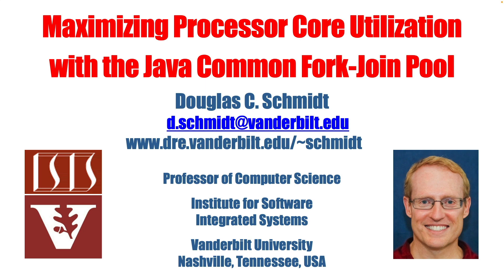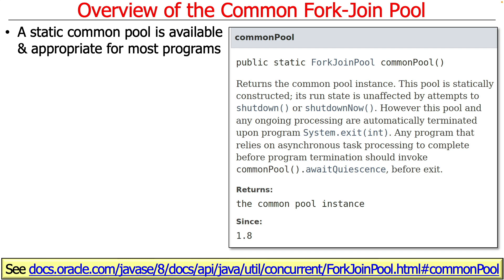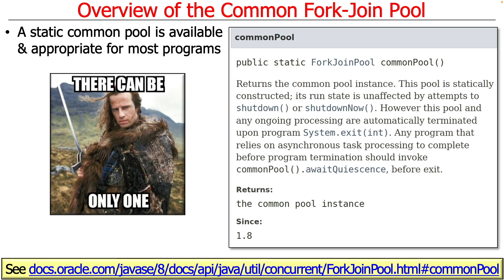We're now going to talk about the Java Common Fork Join Pool. We've talked about it over the course of other lessons, but let's really focus on it now and show how it's designed to maximize processor core utilization. There's a static Common Fork Join Pool that comes out of the box. It's always available — not always initialized, but always available. And as they say in the movie Highlander, there can be only one — there's only one Common Fork Join Pool.